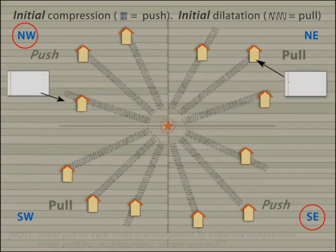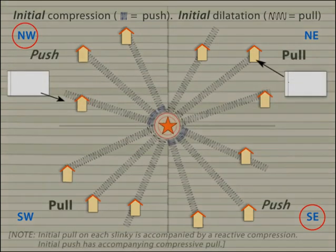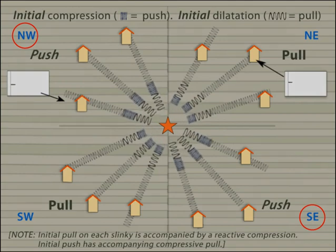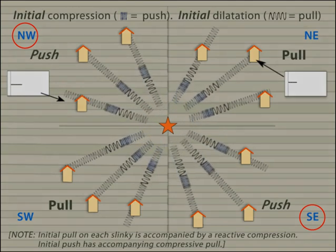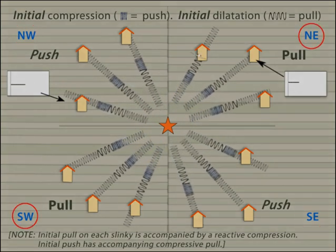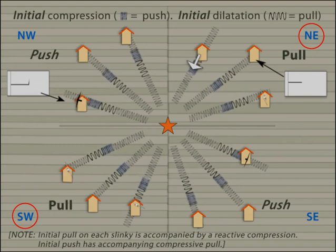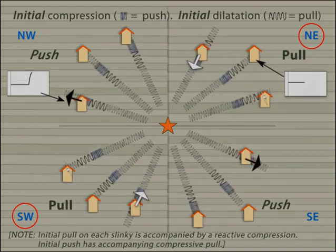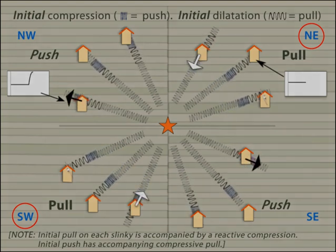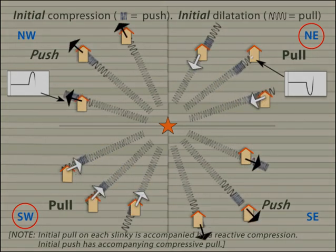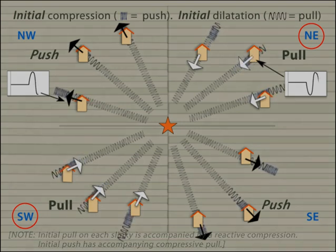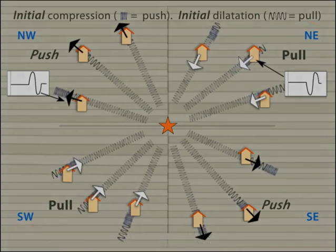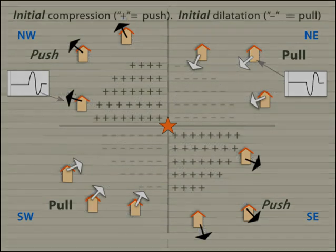Northwest and southeast of the epicenter, the rock is compressed, and the first arriving P waves at those stations are pushes away from the epicenter. Northeast and southwest of the epicenter, the rock is stretched, and the first P waves are pulls toward the epicenter. The dilatational and compressional arrivals are often shown as plus and minus signs, respectively.